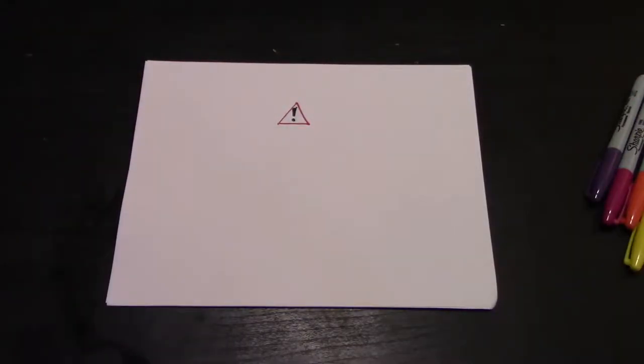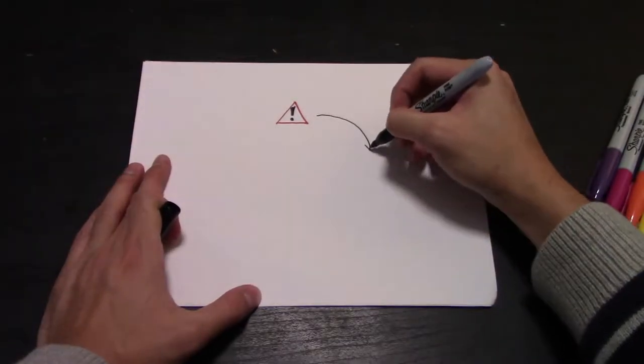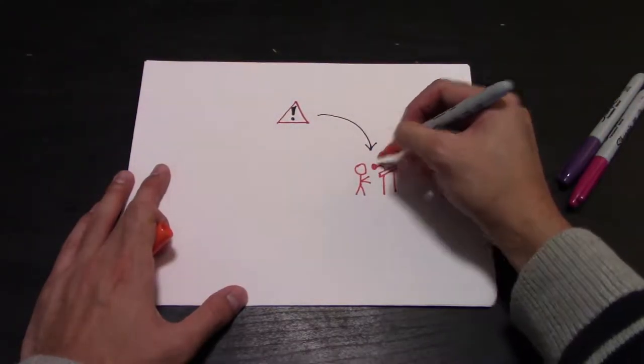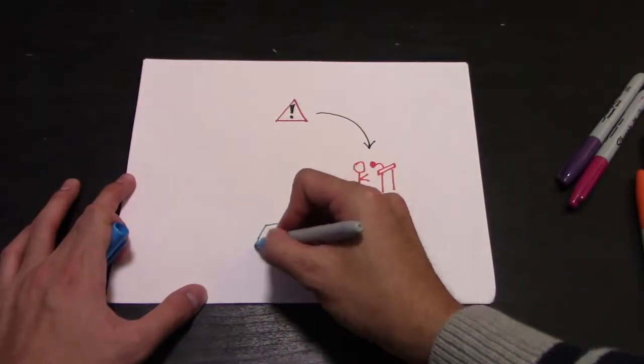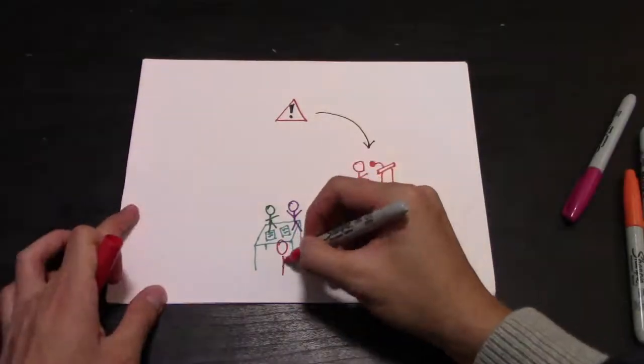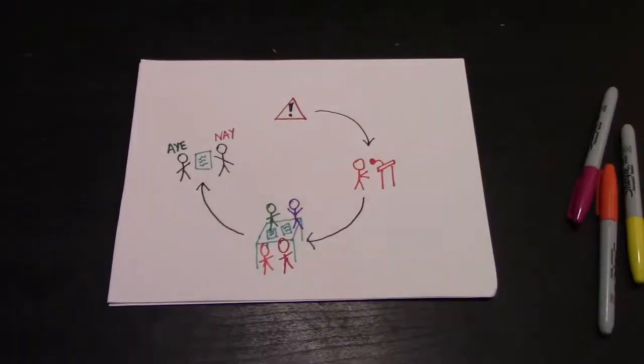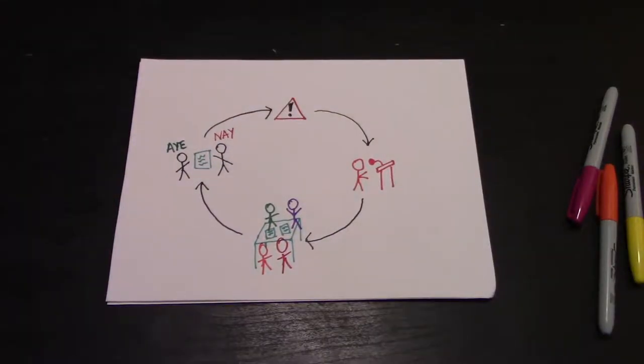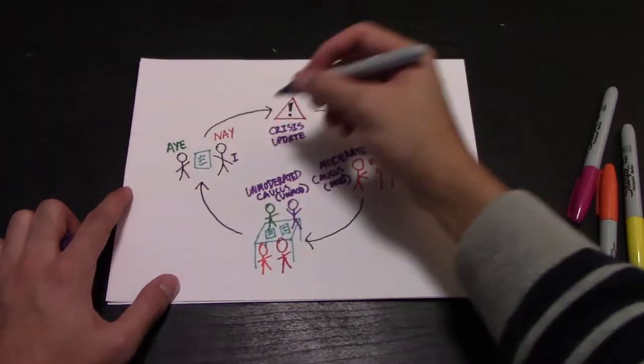You will first hear a crisis update, then discuss the crisis in a series of moderated caucuses, break off into an unmoderated caucus to draft and merge directives, and then introduce and vote on these directives. And then the cycle repeats. Let's talk a little bit more about each of these components.